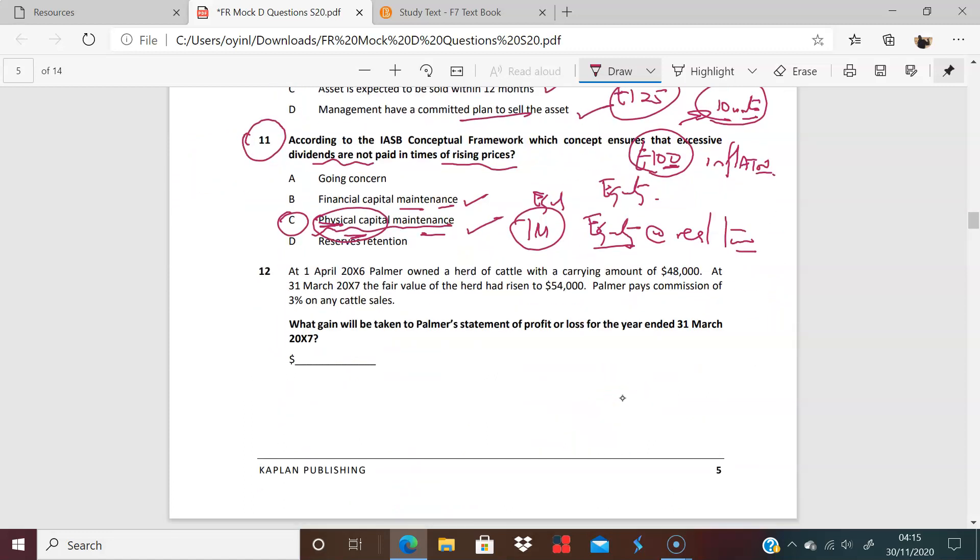So the point is that with C, we're not even talking about any dividends being paid out. We're just trying to maintain equity in real terms. Here, we're actually talking about paying out dividends and we're trying to make that decision. Okay, great.